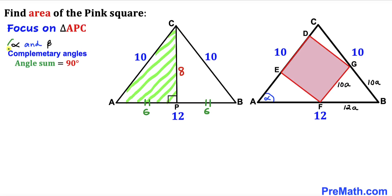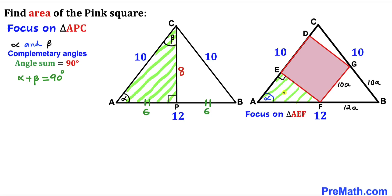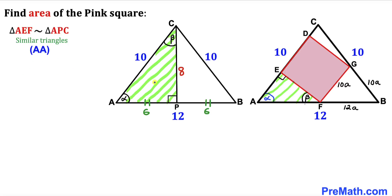Now let's assume alpha and beta are complementary angles, meaning alpha plus beta equals 90 degrees. In right triangle APC, if angle A is alpha, then the other acute angle is beta. Looking at right triangle AEF, the angle at A is also alpha, so the other acute angle is beta. Therefore triangles AEF and APC are similar by the angle-angle similarity theorem.